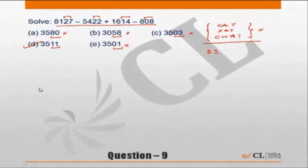In an alternate method we could use the concept of digit sum. Now I am sure all of you are aware of this concept, and let us see how to apply this concept in such a question. Now the expression that we have is 8127 minus 5422 plus 1614 minus 808.